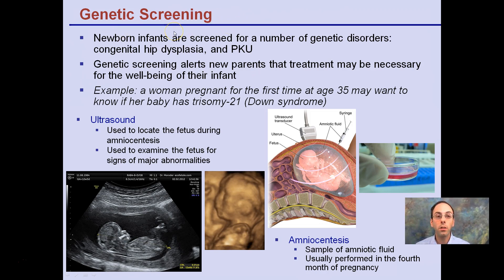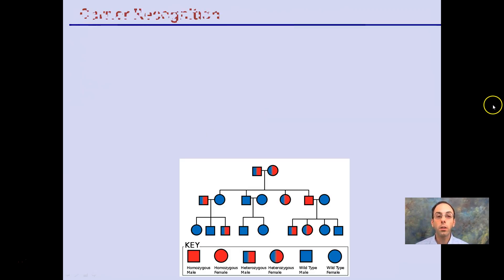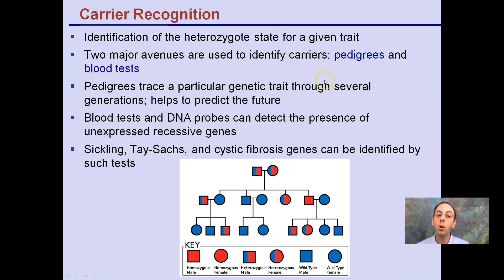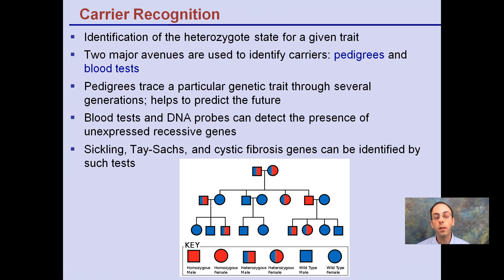Genetic screening brings up significant ethical questions and involves a lot of counseling — there are even academic majors in genetics counseling. Once parents have that information, what do they do with it, and is it for the betterment of themselves or their unborn child? Carrier recognition involves identification of the heterozygote state for a given trait. A parent who knows they are a carrier understands they have increased odds of passing that on. Blood tests can detect expressed recessive genes to determine if an individual may be a carrier.